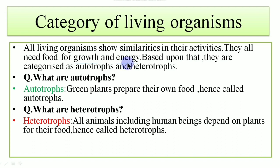Based upon that they are categorized as autotrophs and heterotrophs. What are autotrophs? Auto means self, troph means nourishment. So all green plants which can prepare their own food are called autotrophs.